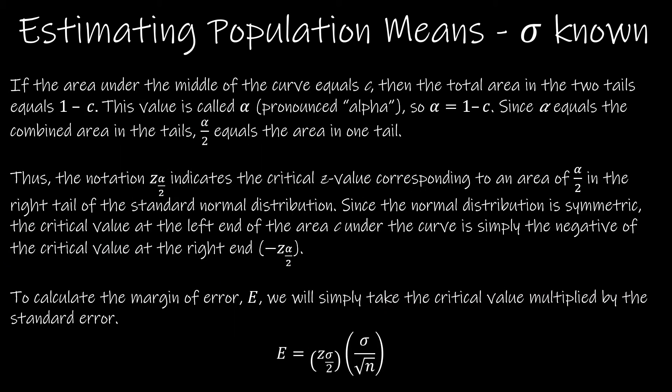So what we just found is that we said we have C, we understand C. Well, alpha is the total area in the tail. So remember on my last picture, I said 0.95, and I subtracted to get 0.05. That means alpha is 0.05. And so alpha over 2 equals the area in one tail. So that's where we found 0.025. So that's basically explaining everything we talked about on the last slide.